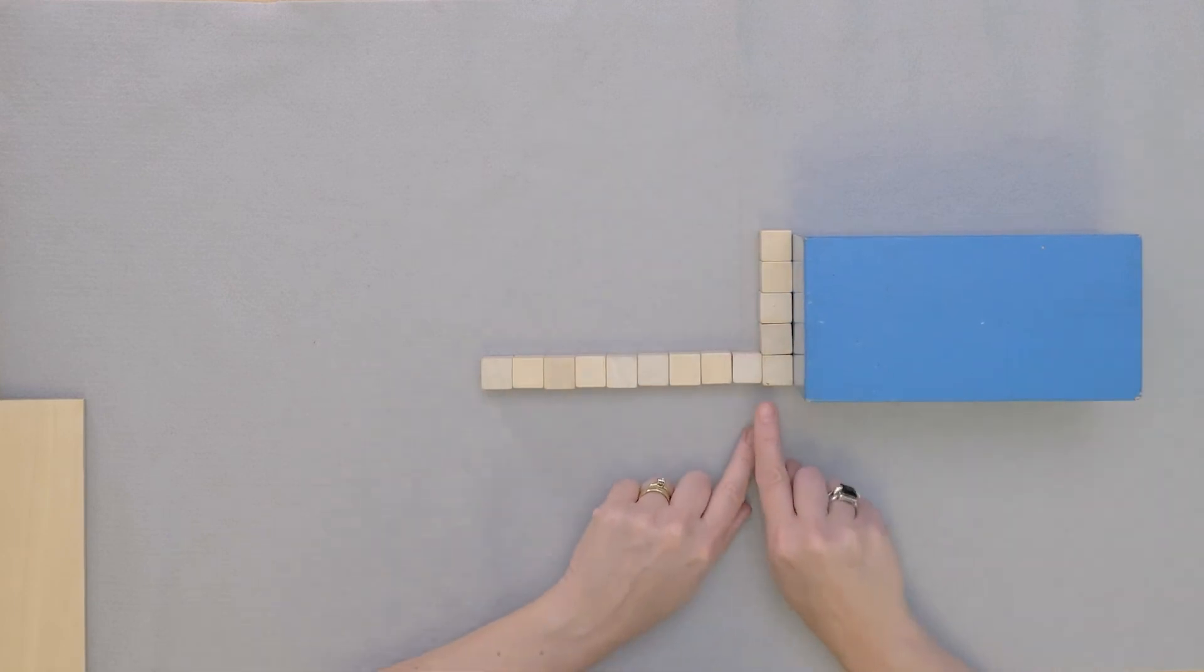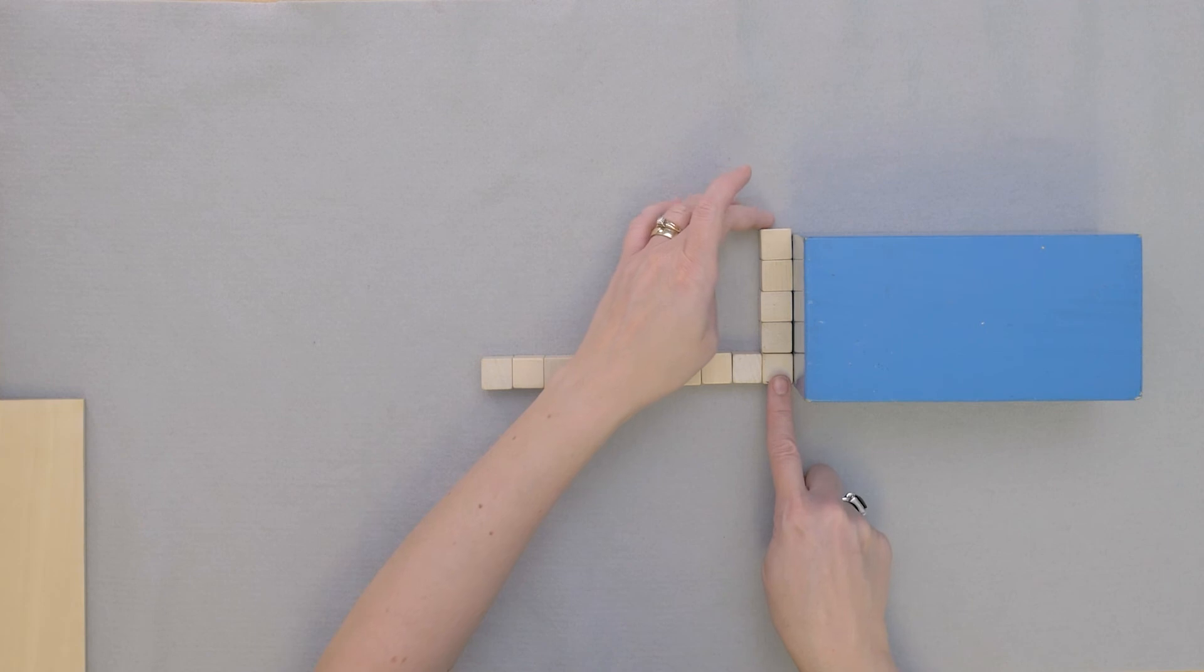And then when we're looking at the solid, not only did we have that area of that bottom prism—the volume of cubes there—but we also built up. So let's build up here as well.